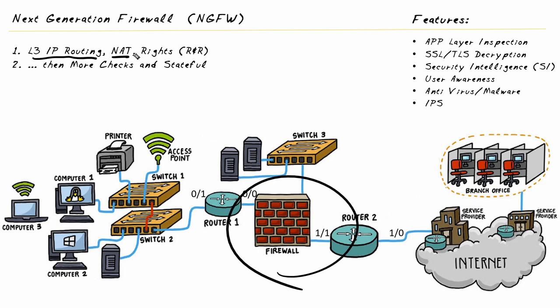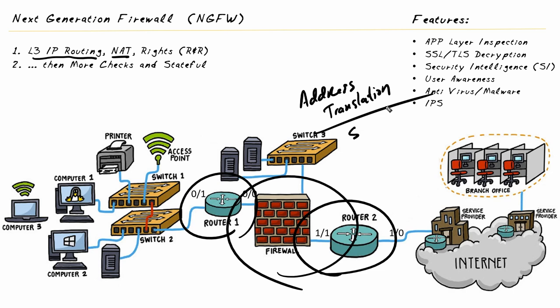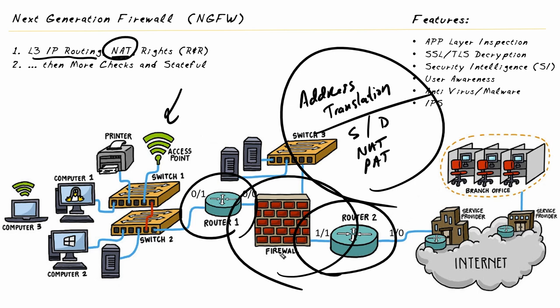The second element that often causes problems is failing to configure network address translation correctly. Layer 3 routers and firewalls can both perform address translation, including source NAT, destination NAT, one-to-one mappings (NAT), and many-to-one mappings (PAT — port address translation). Just like a router connecting a private RFC 1918 address space to the public internet, if the firewall is supposed to perform address translation and isn't set up correctly, that will prevent traffic from going through.